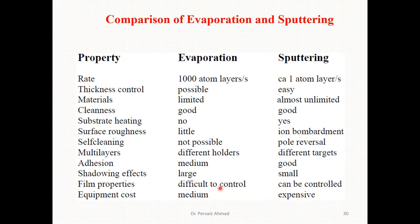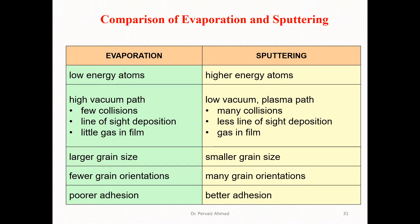Film properties are difficult to control in evaporation, but in sputtering they can be controlled. Equipment cost for evaporation is in the medium range — not too expensive or too cheap — but for sputtering the equipment cost is quite expensive. In evaporation we can utilize low-energy atoms, unlike sputtering where we utilize only high-energy atoms.